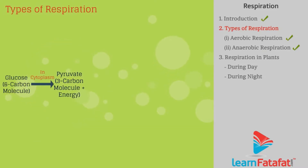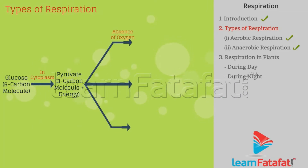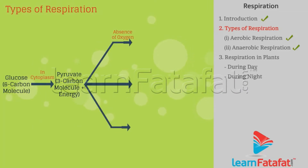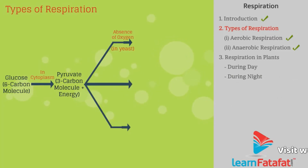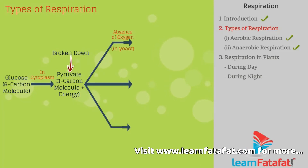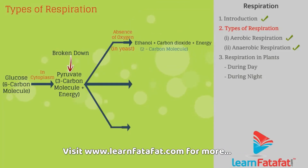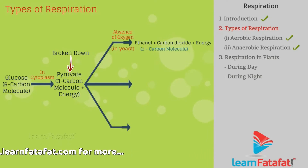The breaking of the pyruvate molecule to produce energy takes place in three different ways. First way: in the absence of oxygen in yeast cells, the pyruvate molecule is broken down to form ethanol and carbon dioxide, producing energy.